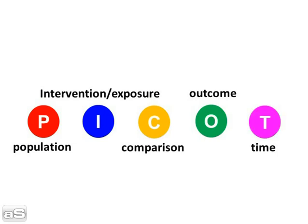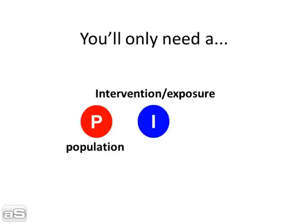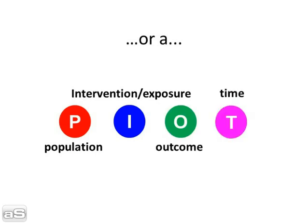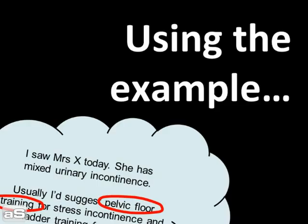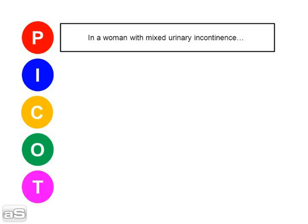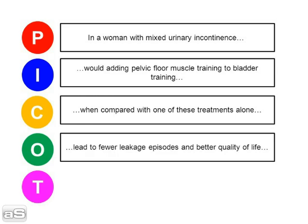That's population, intervention or exposure, comparison, outcome, and time. For some questions, you'll only need a population, intervention or exposure, and an outcome. Or sometimes a population, intervention, outcome, and a time. Using the example, the PICO would look something like this.